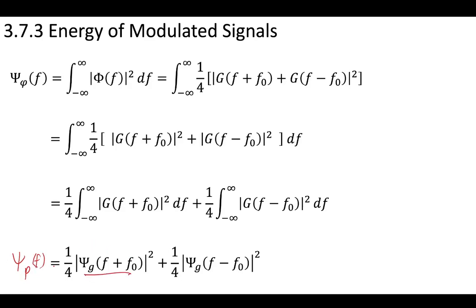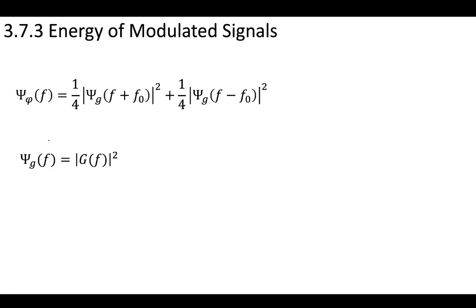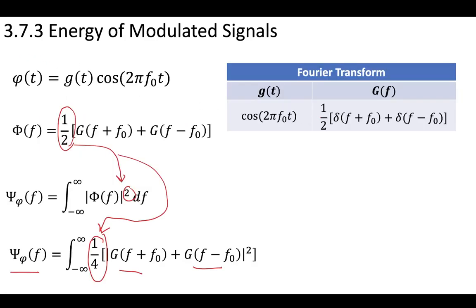We can now relate the energy spectral density of the modulated signal to that of the original signal. The ESD of the modulated signal equals one-quarter times the upper f-naught part of the original signal, plus one-quarter times the minus f-naught part. This means the energy spectral density of the modulated signal is going to be less than that of the original signal, due to that one-half term introduced by the Fourier transform of the cosine.